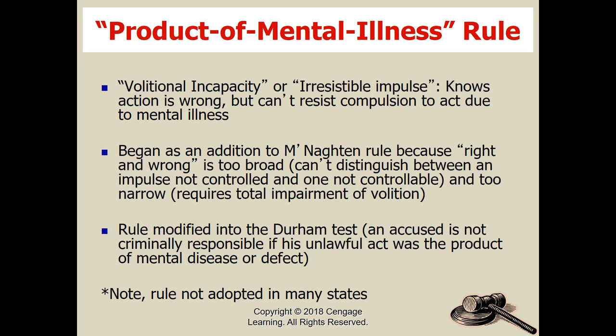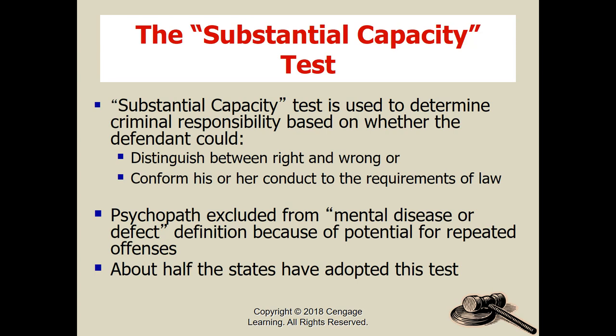An alternative is volitional incapacity, sometimes called the irresistible impulse: you know it's wrong, but you can't resist because of a mental illness. This started as an addition to McNaughton and has become a separate test, usually called the Durham Rule. Most states don't use the Durham Rule, and North Carolina does not. The substantial capacity test is used to determine: can you distinguish between right and wrong, and can you conform your conduct to the requirements of law? About half the states use something like this.